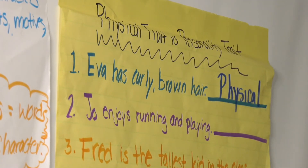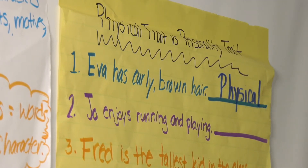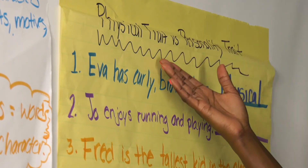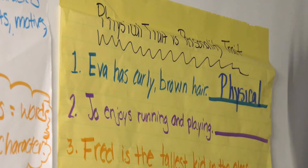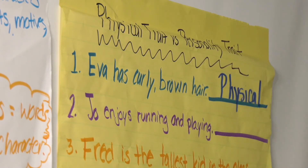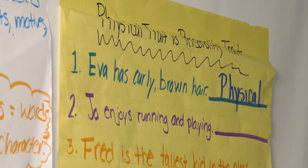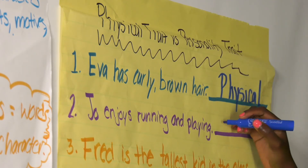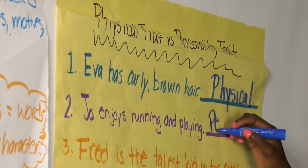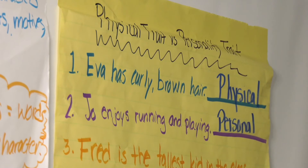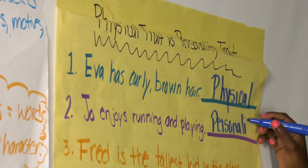Number two: Joe enjoys running and playing. Is this a physical trait or is it a personality trait? We can say if Joe enjoys running and playing, he's athletic. That is a personality trait — something that we can't see unless he's doing it. So if he's athletic, that's something that's inside of him. Personality.